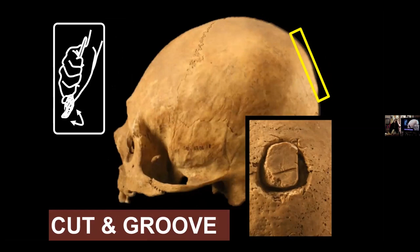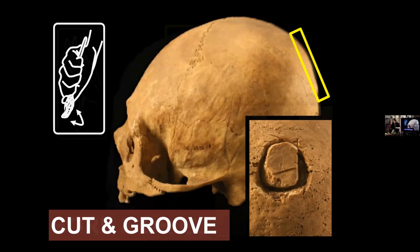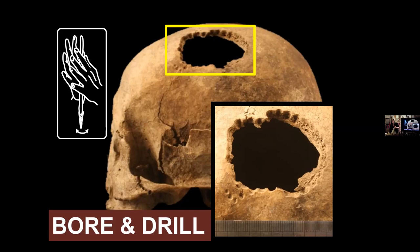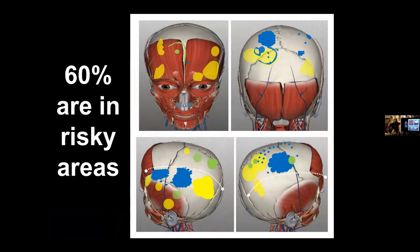This is another form — cutting and grooving — which was not as successful. We know that because in the last slide we saw dendritic bone growth showing healing, but here we see fresh cut marks suggesting no reactive bone and no healing took place. The last technique is boring and drilling, by far the least successful. What's particularly painful is that you can see four tiny drill marks where the practitioner started with the drill and then stopped. Needless to say, this patient did not survive that surgery.